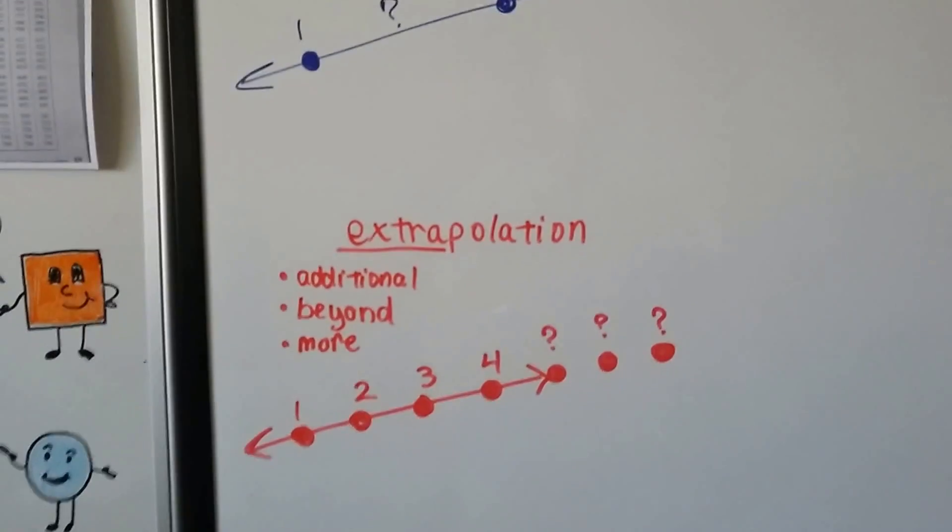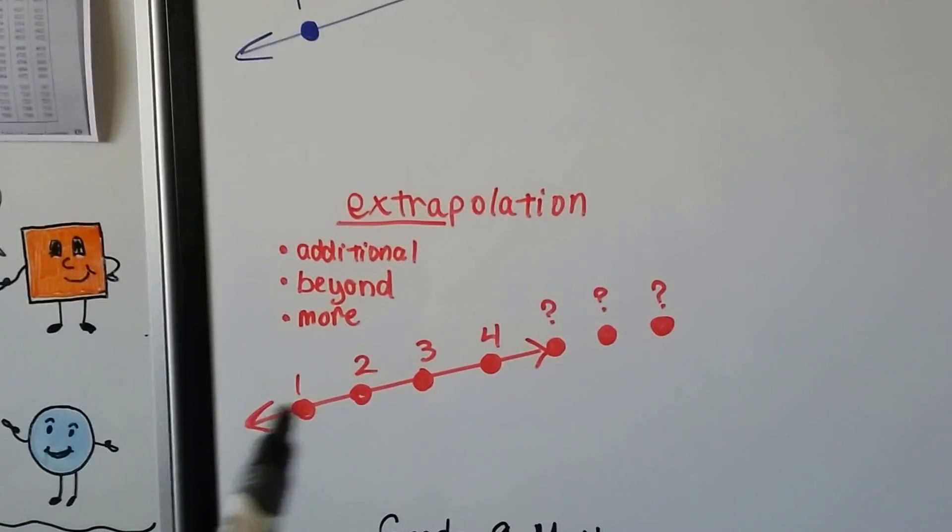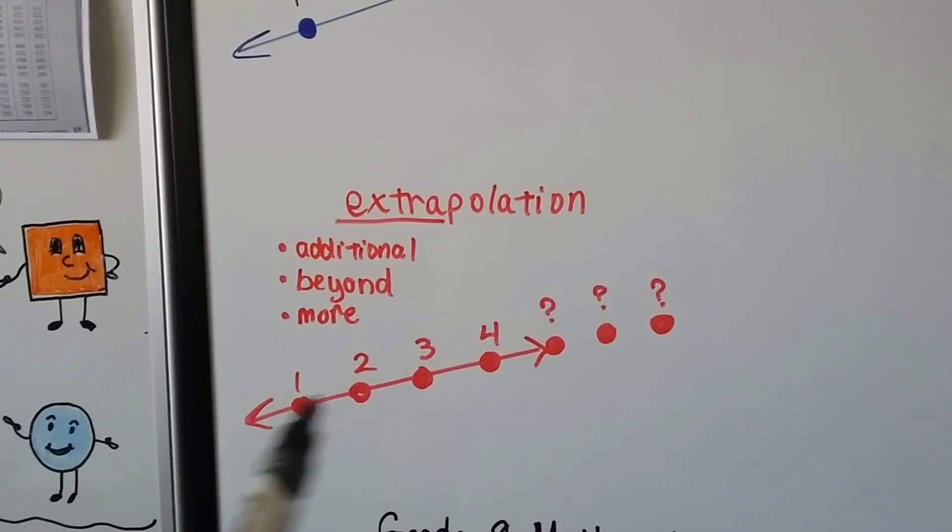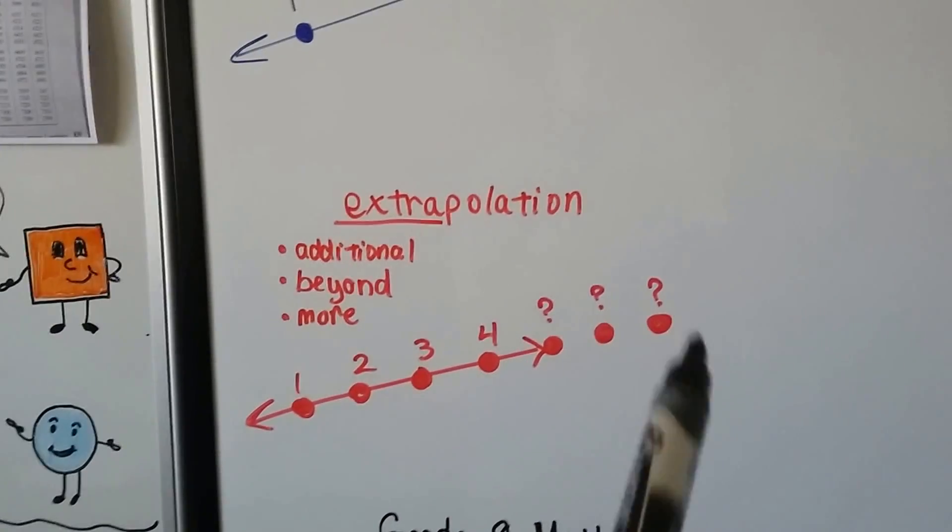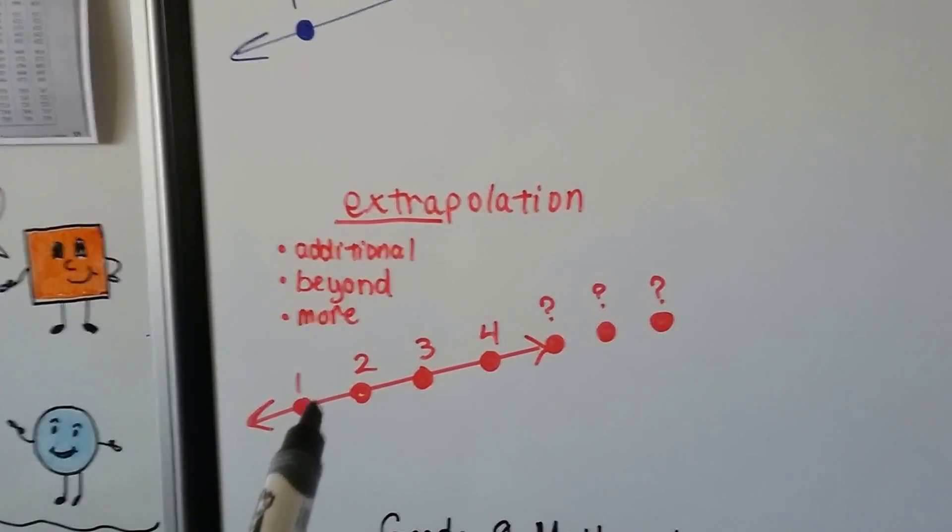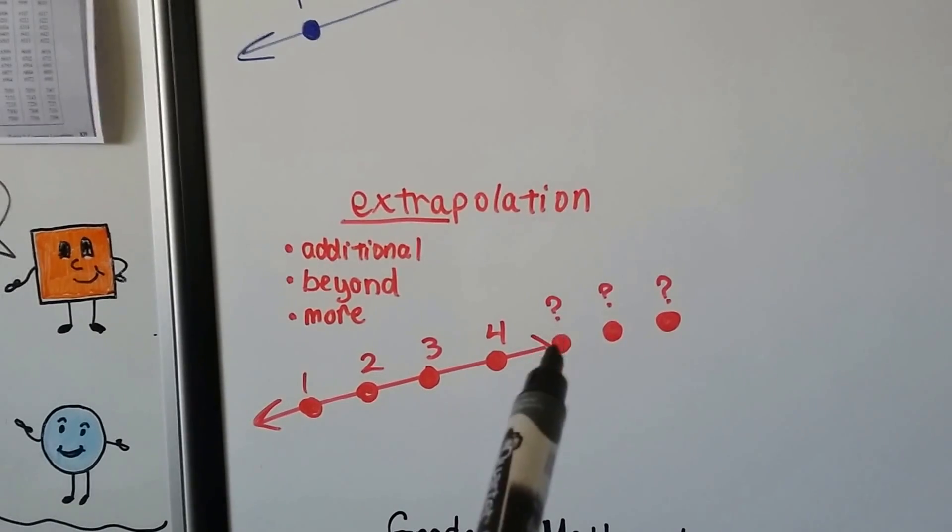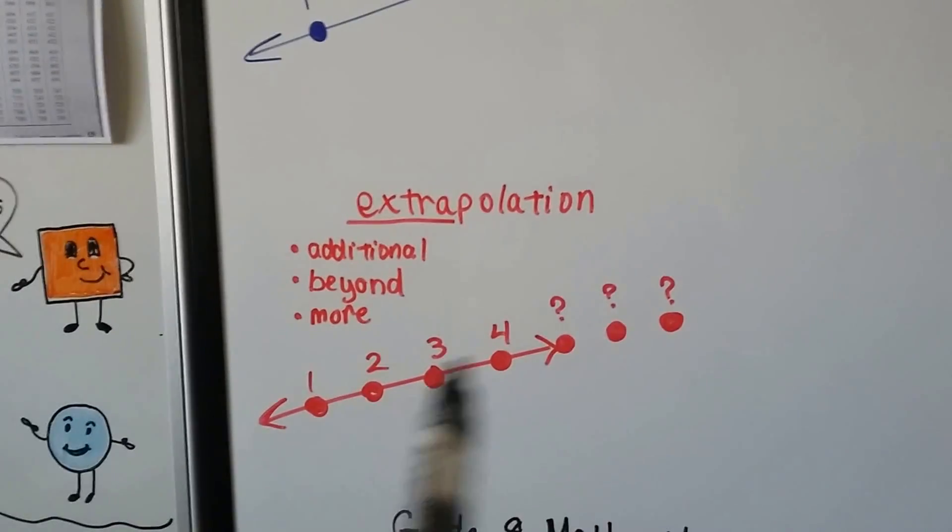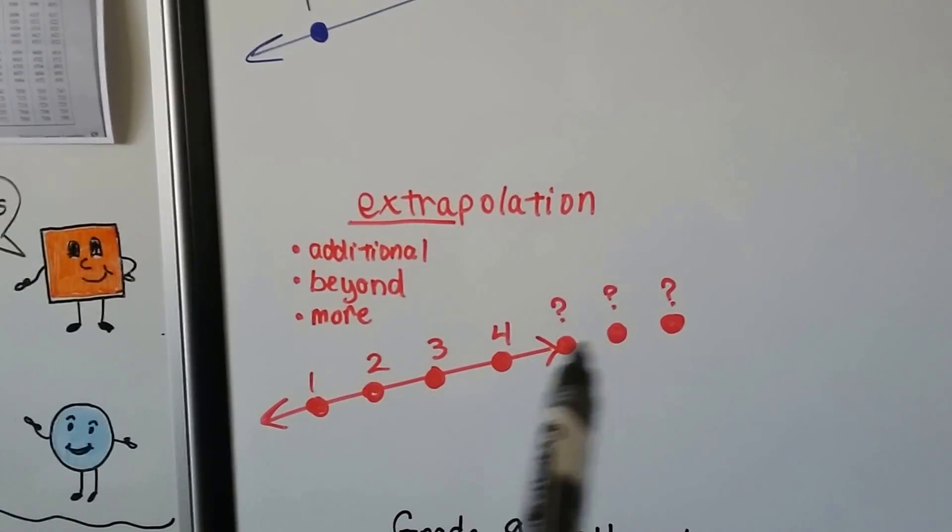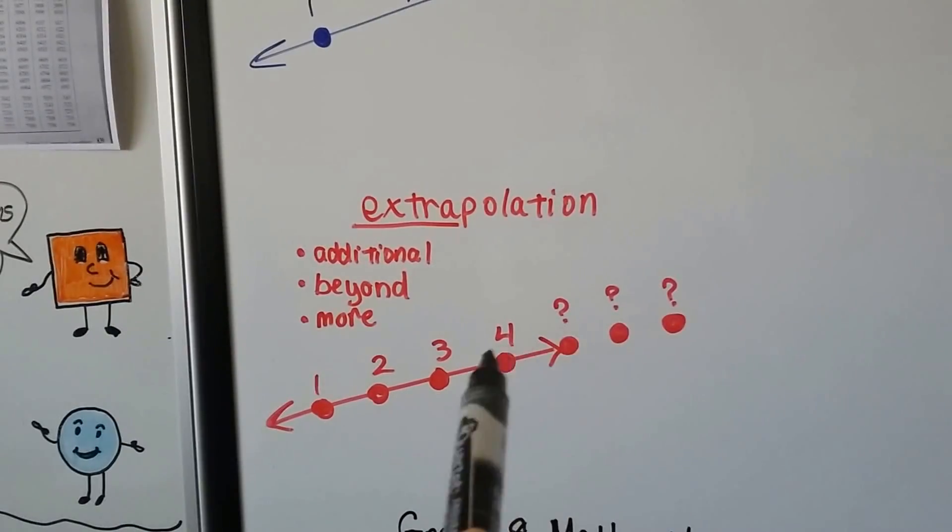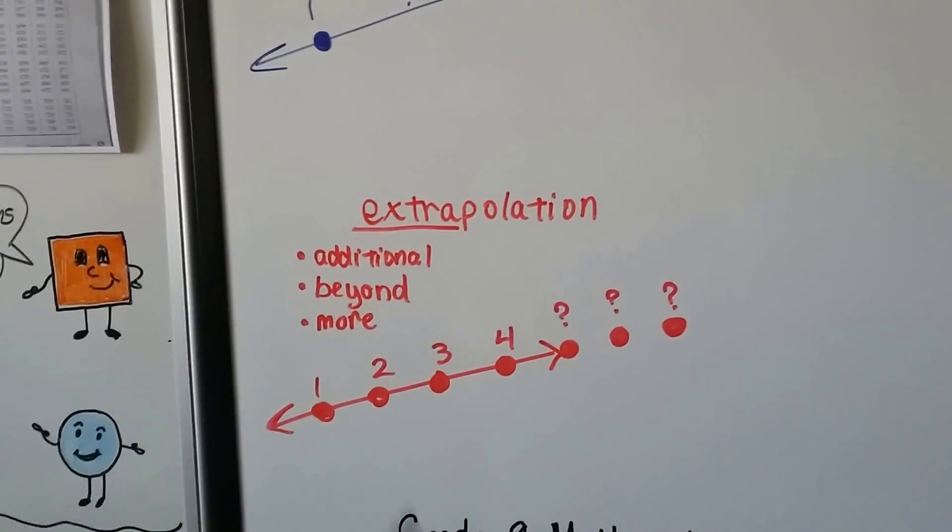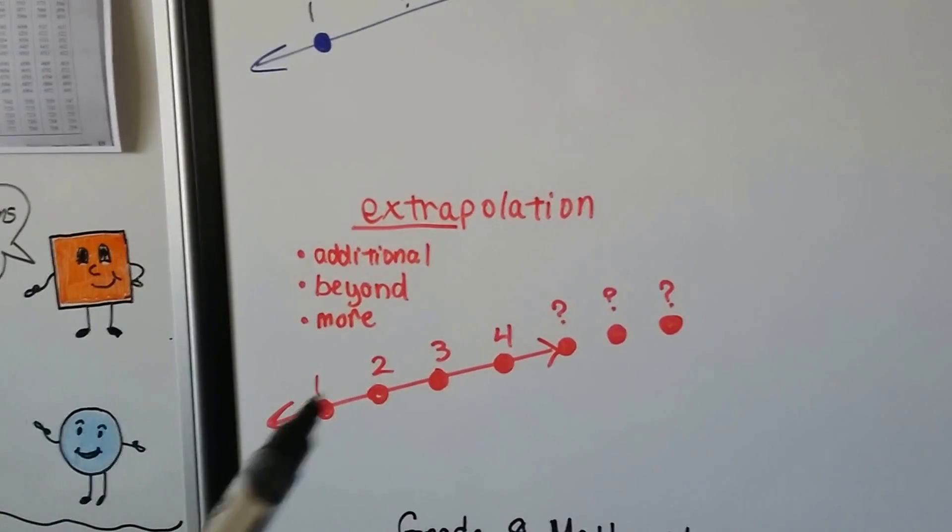To extrapolate means we're given values, but like a trend line, we can see that these are all evenly spaced. So, we could say if that's 1, 2, 3, 4, that must be 5, 6, 7. So, that's extrapolating, we're approximating what it could be on this trend line, because they're all evenly spaced. It makes sense. And, extra means additional, beyond, more.